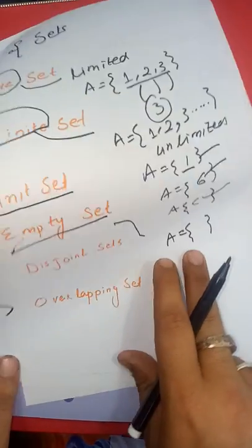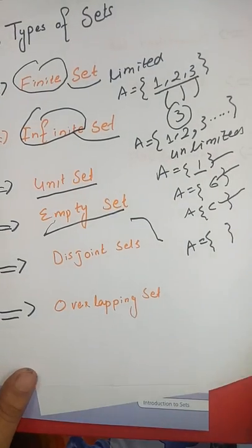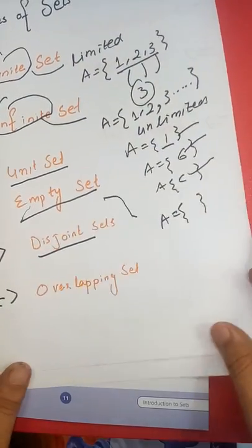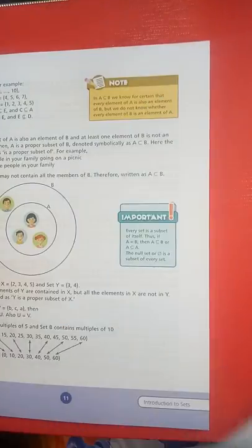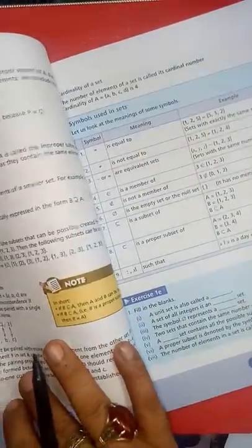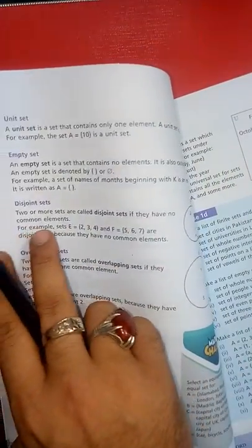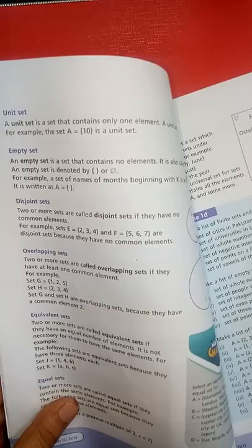Empty set. Empty set is a set which has no element. You can see there is nothing between the brackets, so there is no element. Now let's see disjoint sets.